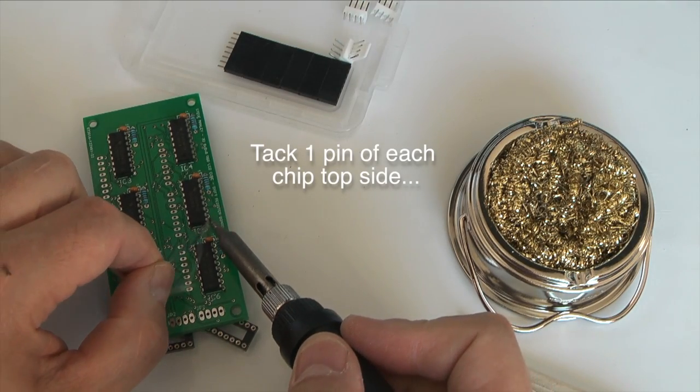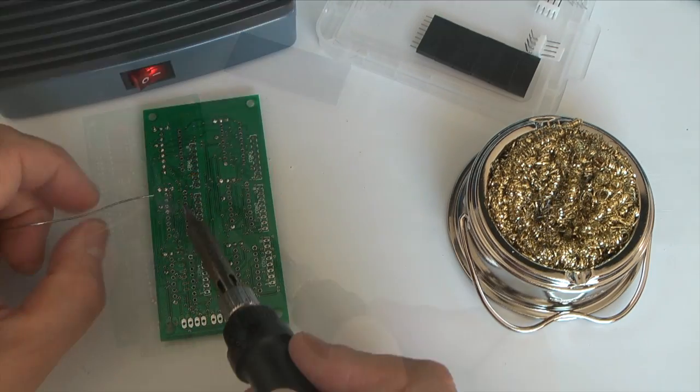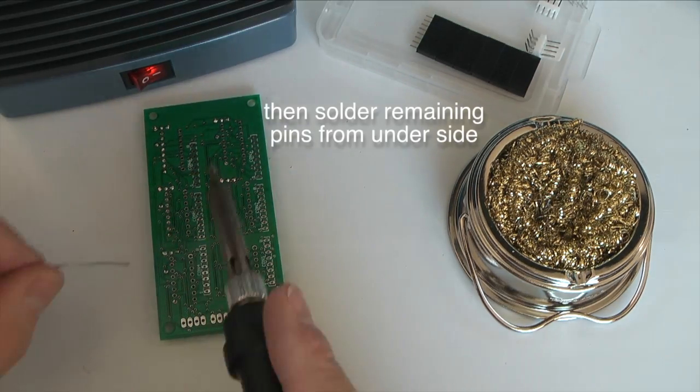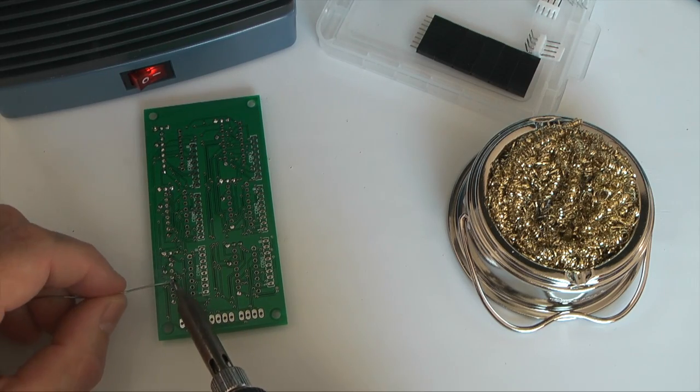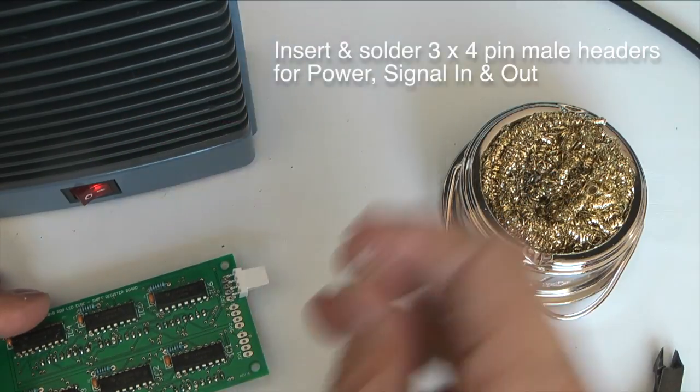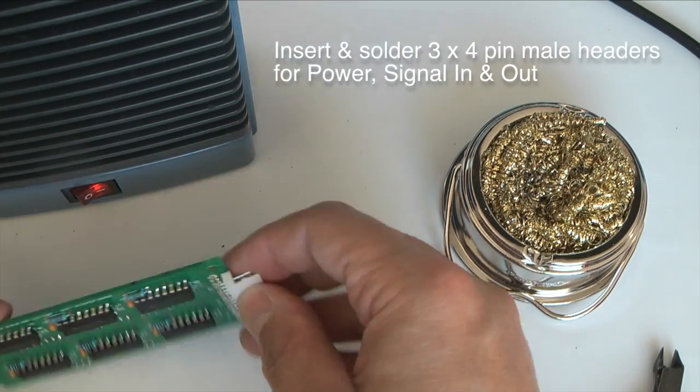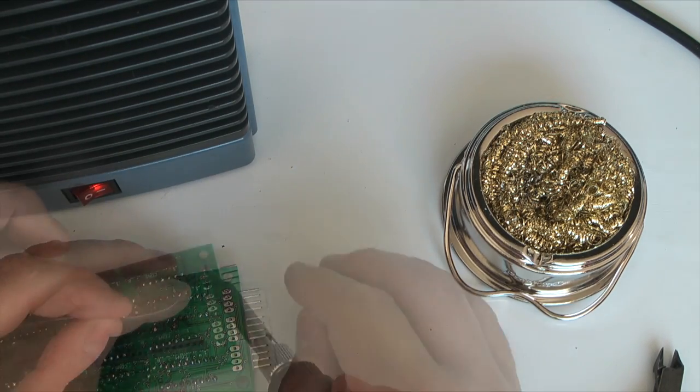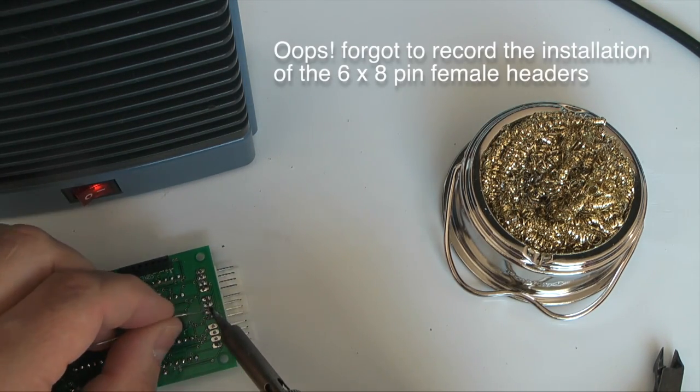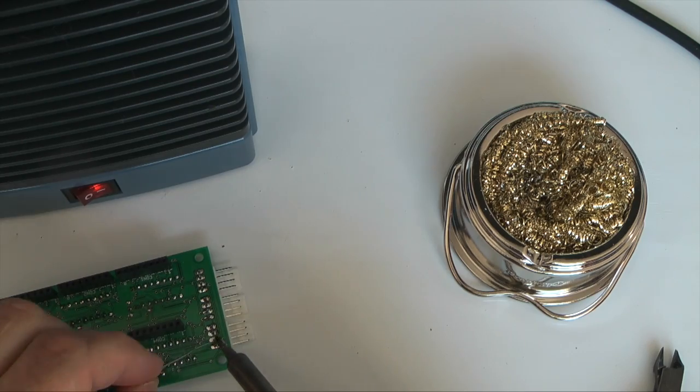Each shift register will drive only one color, so there are two red, two green, and two blue shift registers on each board. Last to go on are the connectors. The three white connectors on the end are for power and signal in and out, and the black eight pin female headers on the underside connect to the base PCB.